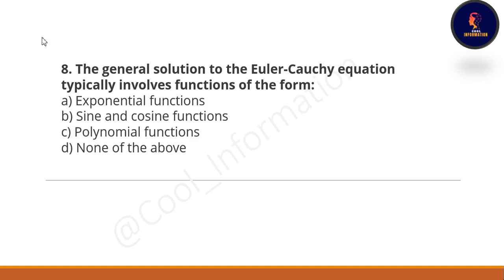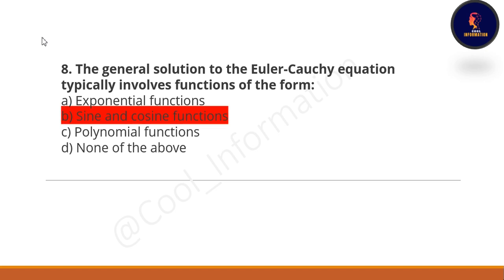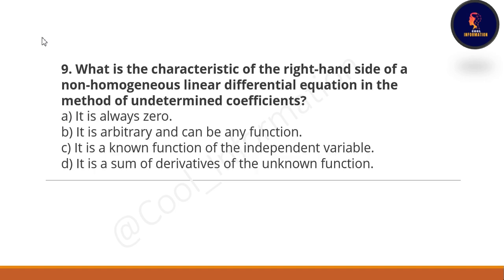Next question: the general solution to Euler's Cauchy equation typically involves functions of what form? The correct option is option B — sine and cosine functions.